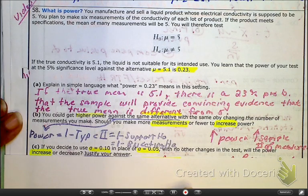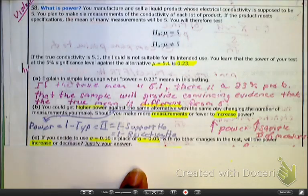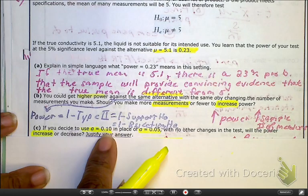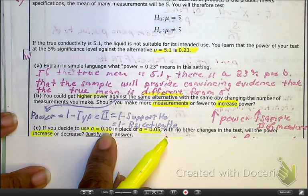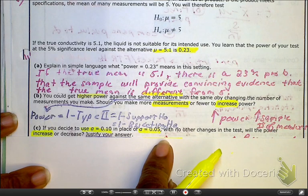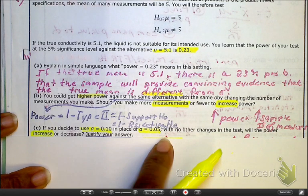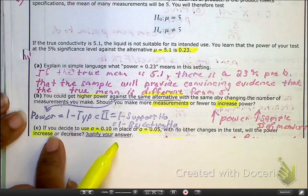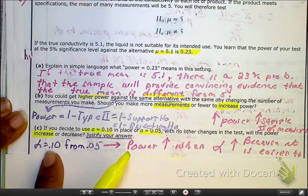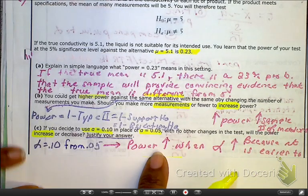Go ahead and read C. If we decide to use that 0.10 alpha instead of that 0.05, that means we increase the alpha. So if we increase the alpha, that also means we increase the power. Just mentioned that. So, going from here to here, the power goes up.